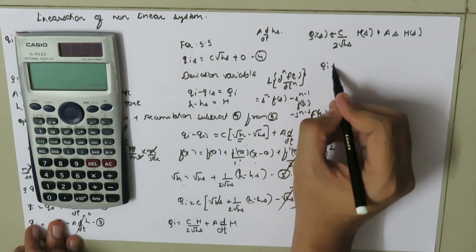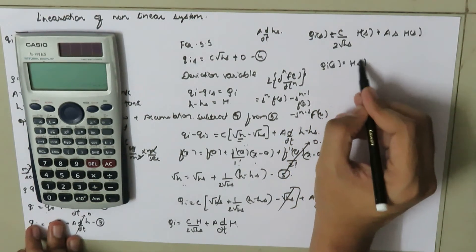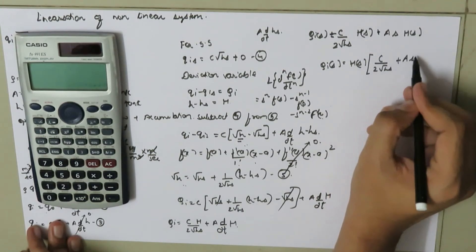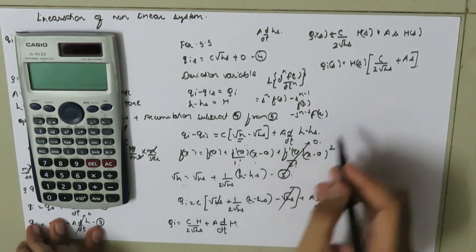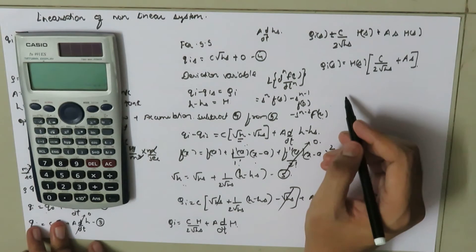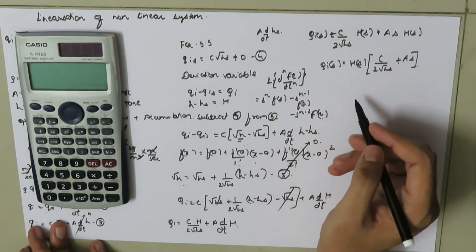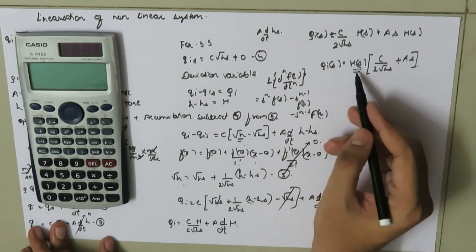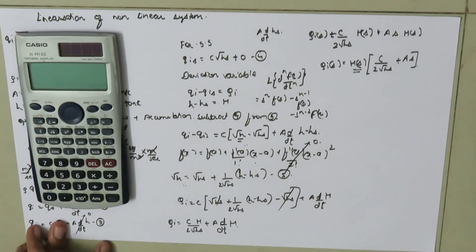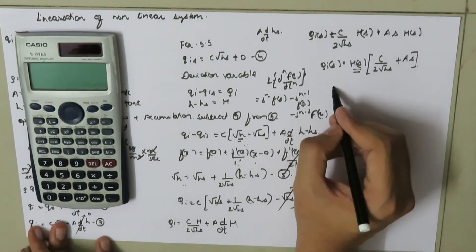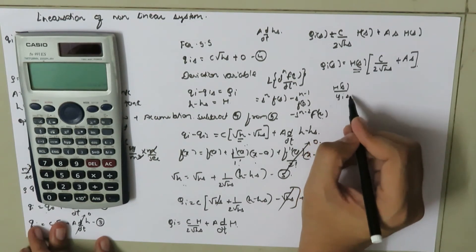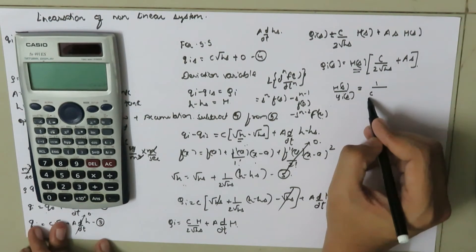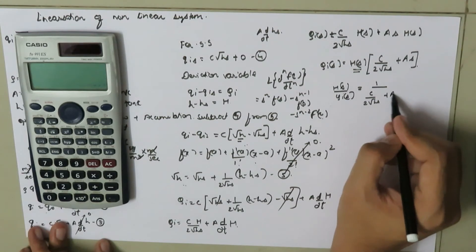After taking the Laplace transform, Q_i(s) equals [C/(2√H_s) plus A·s] times H(s). The transfer function is defined as the Laplace transform of the output deviation variable divided by the Laplace transform of the input deviation variable, so H(s)/Q_i(s) equals 1 divided by [C/(2√H_s) plus A·s].